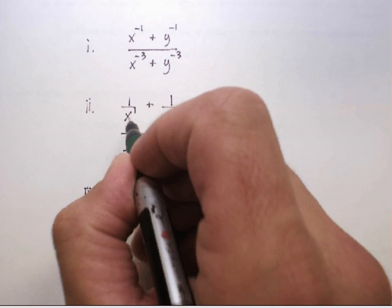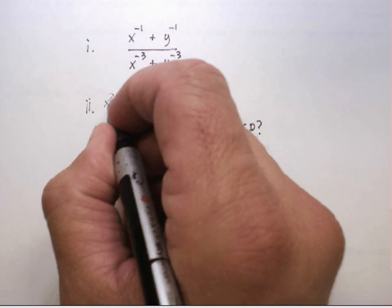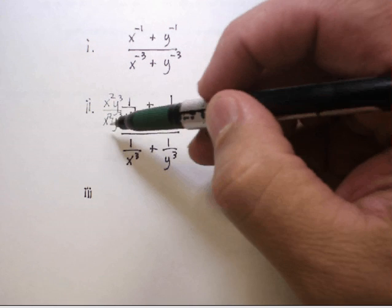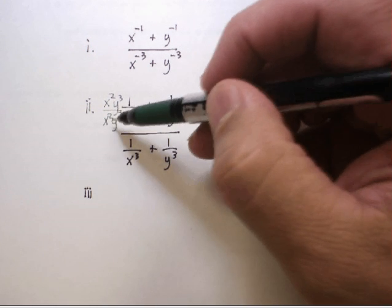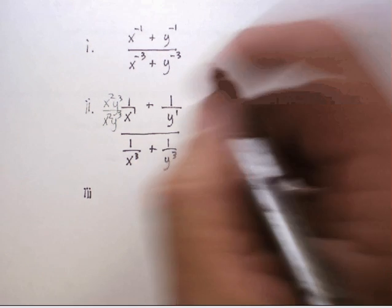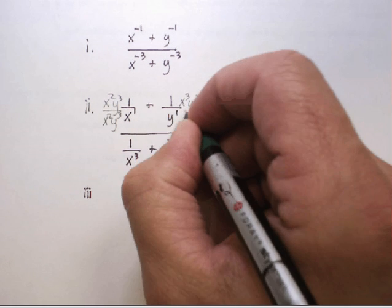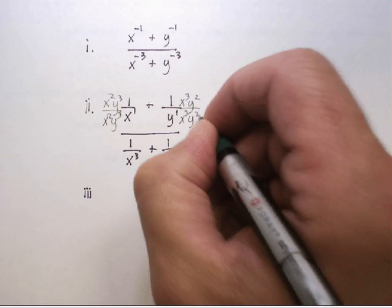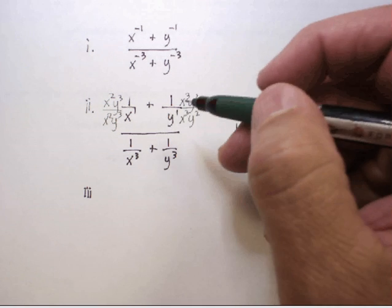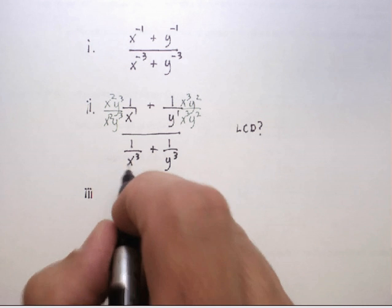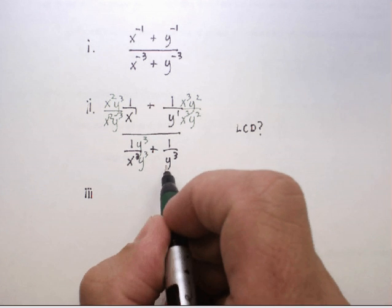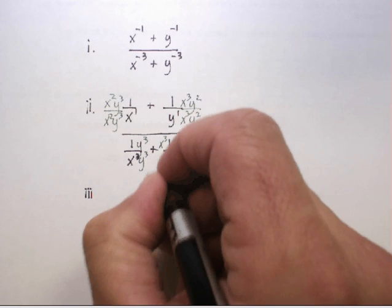I'm going to multiply the top first term by x squared y cubed over x squared y cubed — I'm just multiplying by one, but now when I multiply across I have an x cubed and a y cubed. I'm going to do the same thing for the second term, but multiply it by x cubed y squared over x cubed y squared. That doesn't change the quantity, it just changes the way it looks. Down here it's a little simpler — I just need to multiply by y cubed over y cubed.